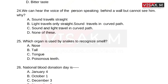The answer is Option B — Light travels only in a straight path, but sound travels in a curved path. That is why we can hear the voice but cannot see the person behind the wall.